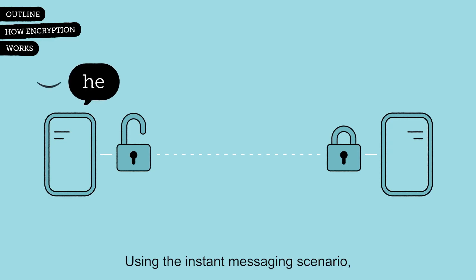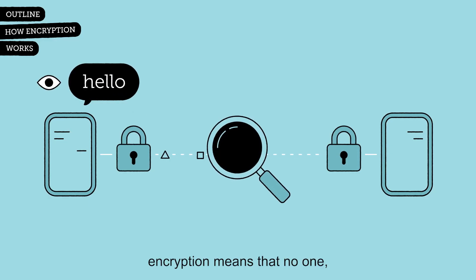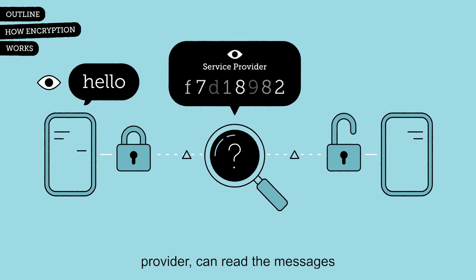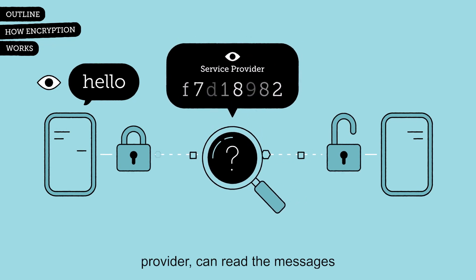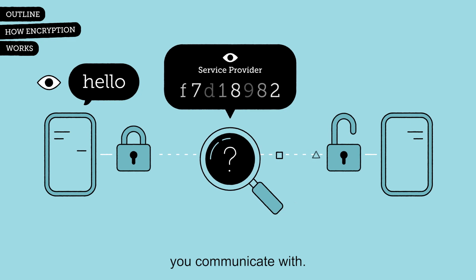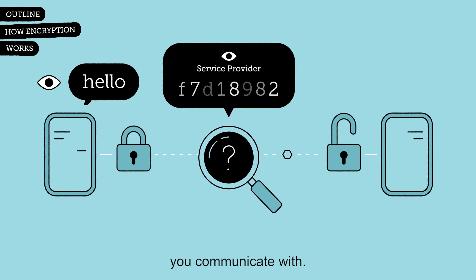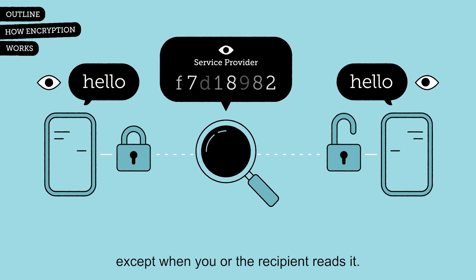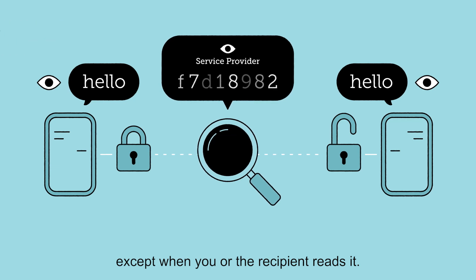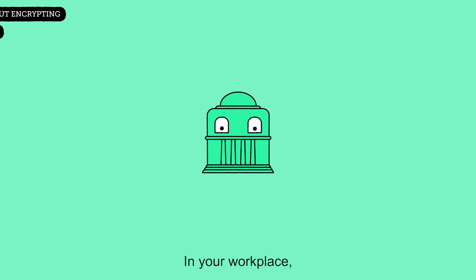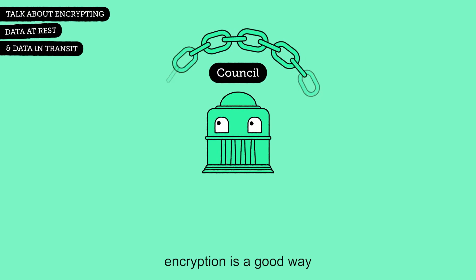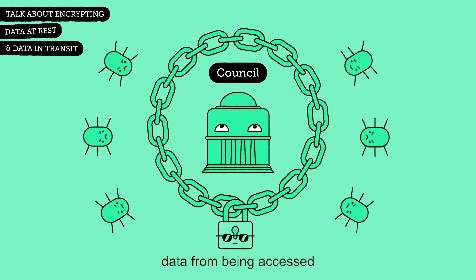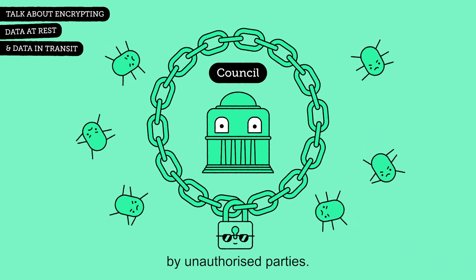Using the instant messaging scenario, encryption means that no one, including the service provider, can read the messages you send and receive from the people you communicate with, because the data is scrambled, except when you, or the recipient, reads it. In your workplace, encryption is a good way to protect your council's data from being accessed by unauthorised parties.